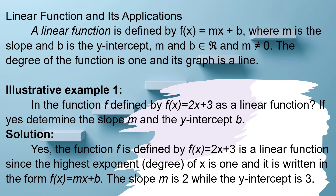Example number one: Is the function f defined by f of x equals 2x plus 3 a linear function? If yes, determine the slope m and the y-intercept b. Solution: Yes, the function f defined by f of x equals 2x plus 3 is a linear function.